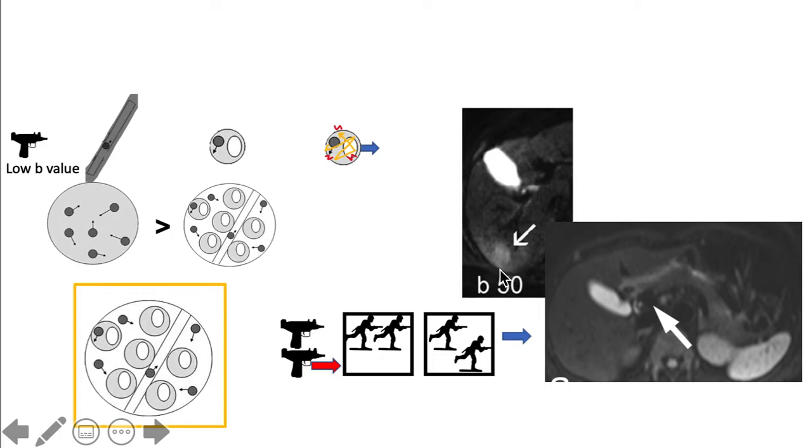However, notice that the tumor remains bright. Also notice there is a part of the liver parenchyma where we are not sure if this is part of the diffusion or the normal parenchyma. At low B value, there is not much contrast between the tumor and the normal cell.